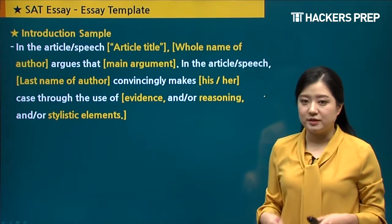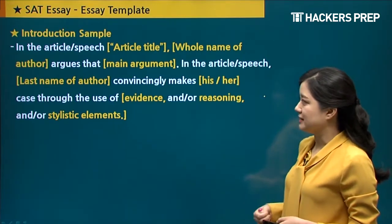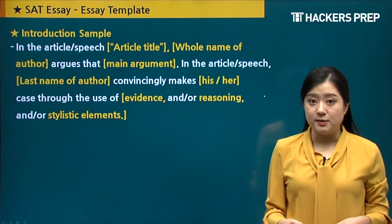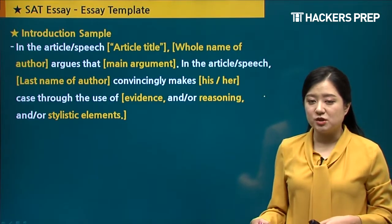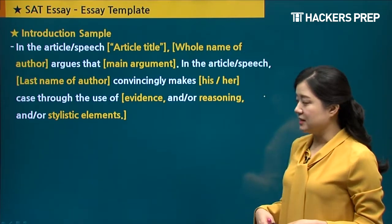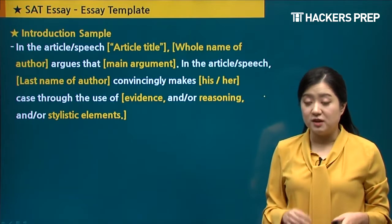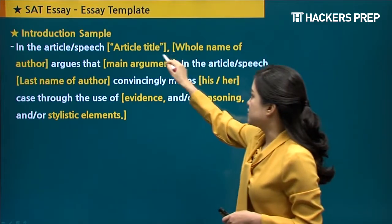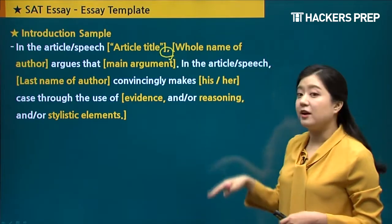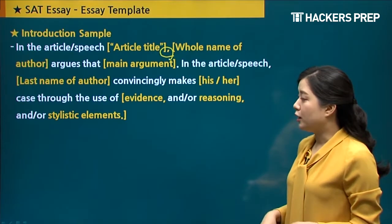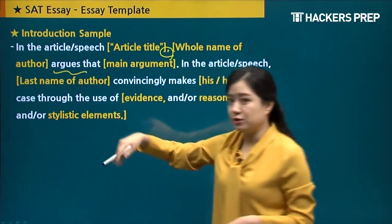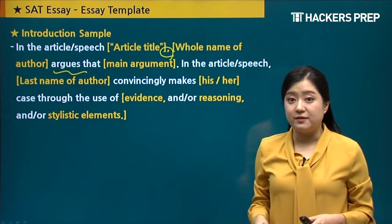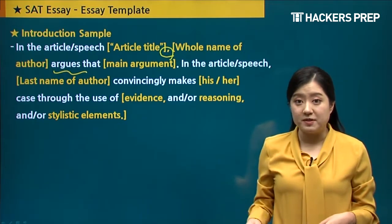Let's look at a sample. These are the typical two sentences you should have. The first sentence: 'In the article' or 'in the speech' — you can tell the difference because an article will have the name of a magazine or newspaper, while a speech often has a location instead. You include the article title in quotation marks with a comma, then the full name of the author. Then use a verb like 'argues that' or 'asserts that,' followed by the main point provided in the prompt, which you can copy or paraphrase.